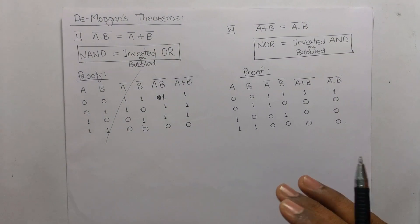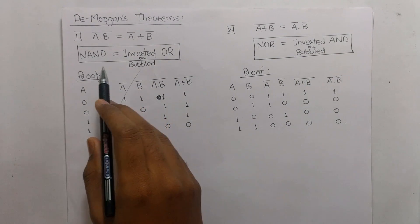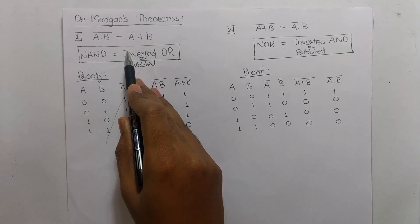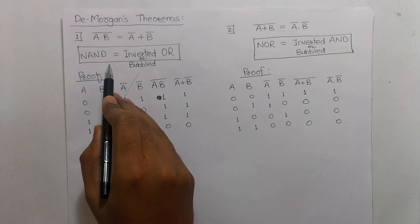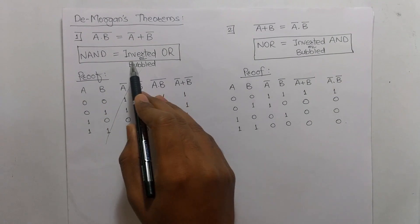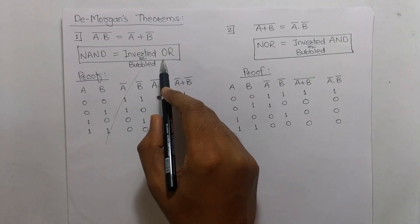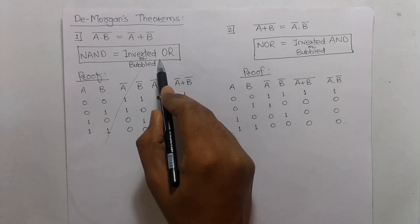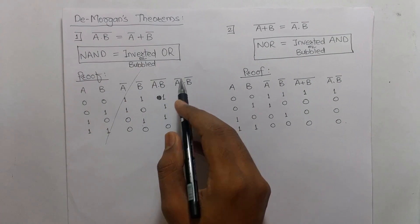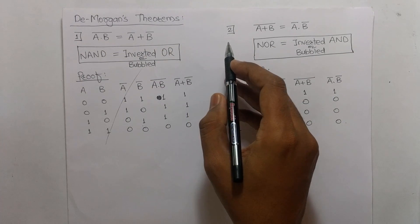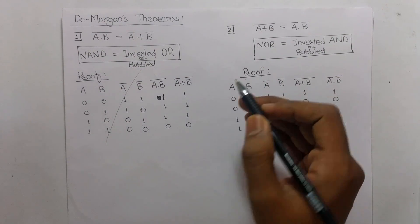Now we have De Morgan's theorem. There are two theorems. The first one states that the inverse of A·B equals A inverse plus B inverse. This means NAND logic equals A inverse plus B inverse. So if we have inverted inputs and apply OR logic, these two expressions are logically the same.